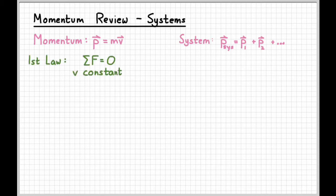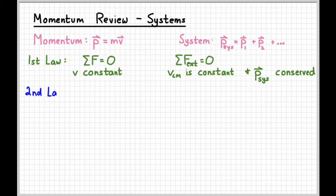Going back and reviewing what we know about physics so far, we first defined Newton's first law, and we said that when there are no forces acting on an object or when the forces are balanced, in other words when the net force is zero, the velocity of that object is constant. And so in a system of objects, if the net external force is zero, then the velocity of the center of mass is constant and the momentum of the system is conserved. That's a way of expressing Newton's first law for a system of objects.